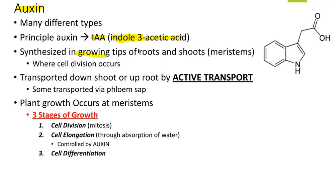Auxin is synthesized at meristems and transported down the shoot or up the root via active transport, with some also transported through the phloem. The primary growth of the plant takes place at meristems, which is why it is the principal site of auxin production. Auxin is required for cell division, cell elongation, and cell differentiation — three types of growth.